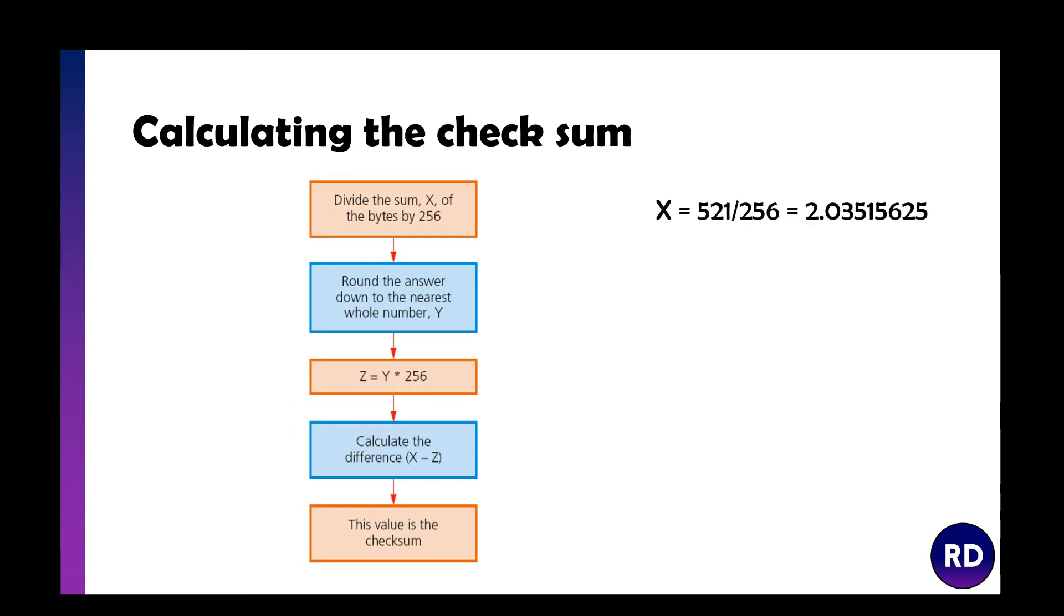First, you divide the sum of the bytes by 256. So if the total bytes was 521, then 521 divided by 256 equals 2.03515625. We then round the answer down to the nearest whole number, which becomes Y, so Y would be 2.